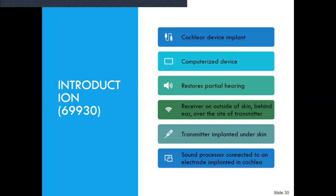Now we're going to go to introduction, page 583. A cochlear device implant is a computerized device placed inside the ear that restores partial hearing in people with profound hearing loss. A receiver is used outside of the ear to help pick up sound waves. Code 69930 is introduction: cochlear device implant, computerized device, restores partial hearing, receiver on the outside of the skin behind the ear over the site of the transmitter, transmitter implanted under the skin, sound processor connected to an electrode implanted in the cochlea.